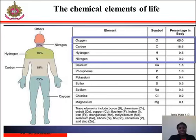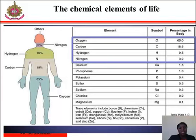Just six elements — carbon, hydrogen, nitrogen, oxygen, calcium, and phosphorus — make up almost 99% of the mass of a human body, as shown in the diagram on your screen. In addition to these six major elements that compose most of the human body, humans require smaller amounts of possibly 18 more of these chemical elements.